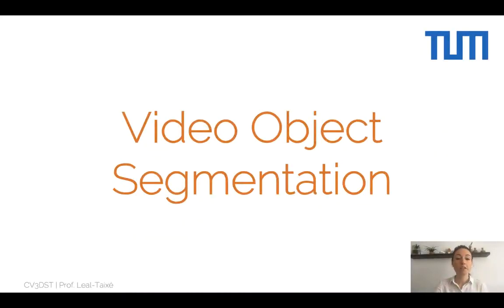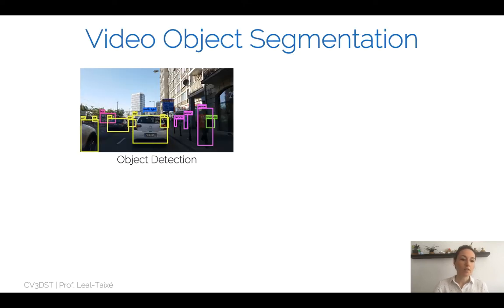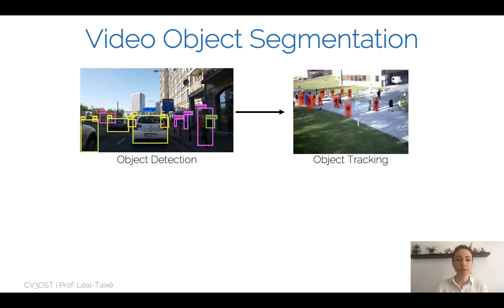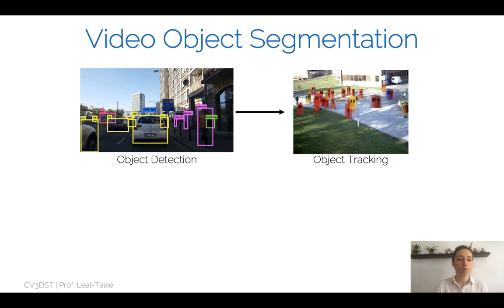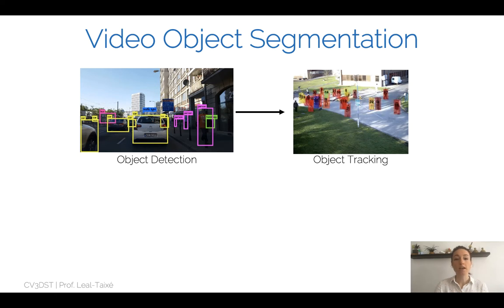Hello everyone! Welcome to the Video Object Segmentation Lecture. In this series of lectures of CB3-DSD, we started by breaking down the image with bounding boxes — we were interested in finding interesting objects inside the image and representing them with bounding boxes. We then moved towards the temporal domain: what can we do when we have not only one image, but a stream of images? We are now interested in extending object detection to the temporal domain, thereby trying to solve the task of object tracking.